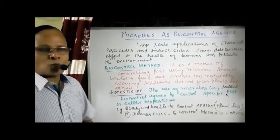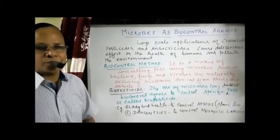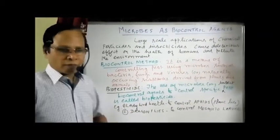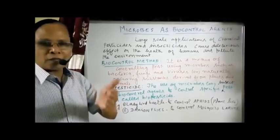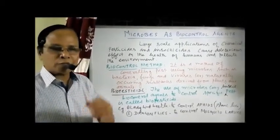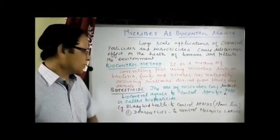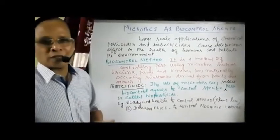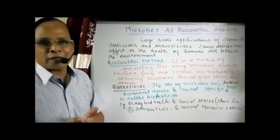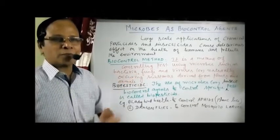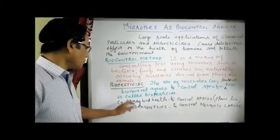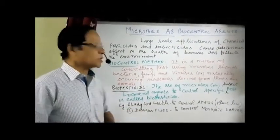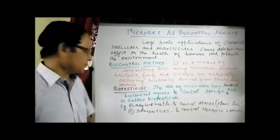Two examples are given in the book. One is the ladybird. It has a red color with spotted wings, and it is used to control aphids. Aphids are nothing but plant lice, which damage the plants. They are being controlled with the help of the ladybird, to control aphids — the plant lice.